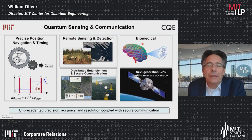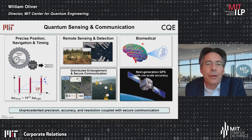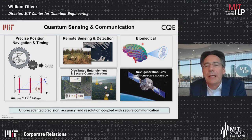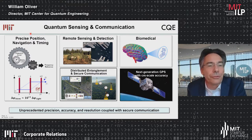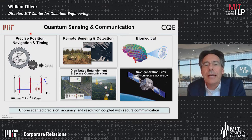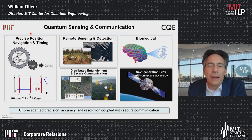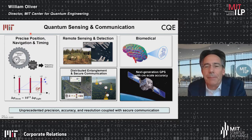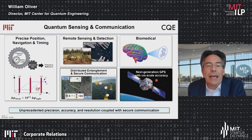The talk today will be primarily about quantum computation, but let me highlight a few areas in quantum sensing and quantum communication that the Center for Quantum Engineering is also covering. This includes precision positioning, navigation and timing, remote sensing and detecting, biomedical applications — for example, magnetic field sensing in the brain — next generation GPS with centimeter-scale accuracy, and the distribution of quantum entanglement and secure communication.